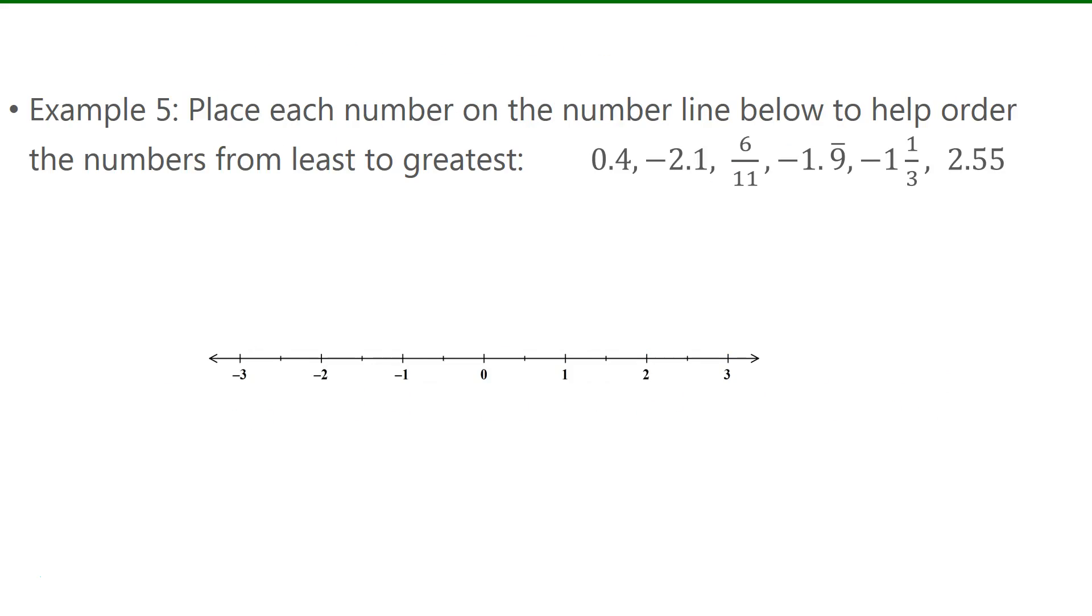Now the last example here, we have to put these numbers on the number line, and then order them from least to greatest. So look at the number line here and see how it's divided. This is zero, and this is one. The halfway point here would be 0.5. So if I'm going to place 0.4, I'm going to place that just before the halfway point here. So 0.4. I'm going to cross that off.